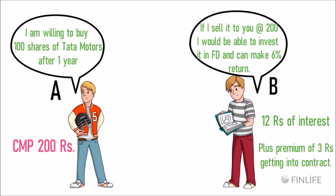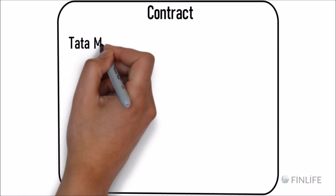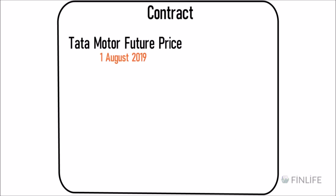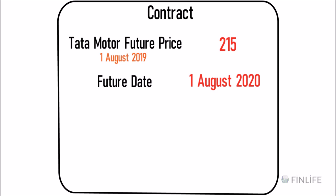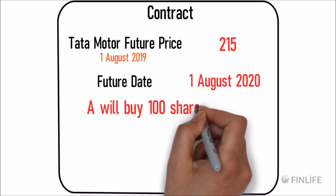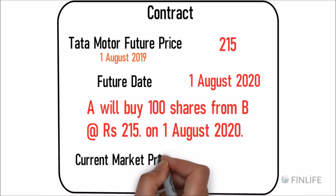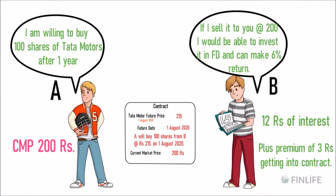A agrees and says he will give 215 rupees overall. So 215 rupees becomes the future price for the Tata Motors one-year contract. The contract states: today's date is 1 August 2019, the future date is 1 August 2020, and on that date A will buy 100 shares from B at 215 rupees. The current market price is 200 rupees.